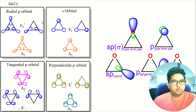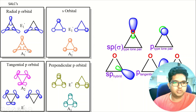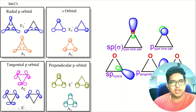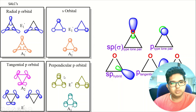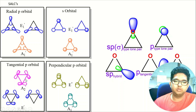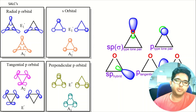On the left side we have the symmetry-adapted linear combinations of cyclopropane orbitals, taking only the frontier orbitals. We have the radial P orbital, the descendant S orbital, the tangential P orbital for this cyclopropane molecule, and the perpendicular P orbital — perpendicular to the ring. We have four types of orbitals here: radial, tangential, perpendicular, and the S orbital. The tangential orbital is degenerate, while the other set is non-degenerate.